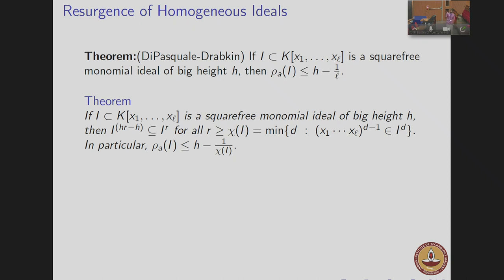What we have shown is that if I is a square-free monomial ideal of big height H, then I^{(HR - H)} ⊆ I^R for all R ≥ chi(I), where chi(I) is the chromatic number — an invariant from combinatorics.